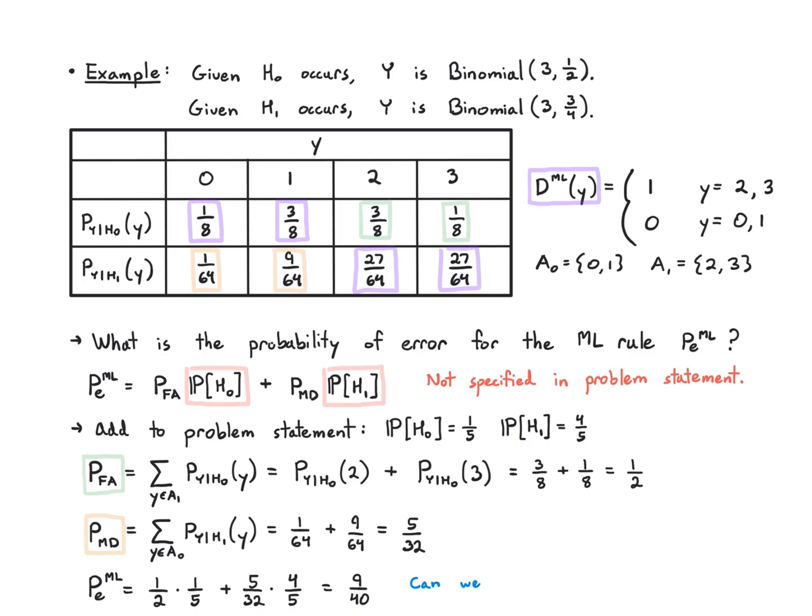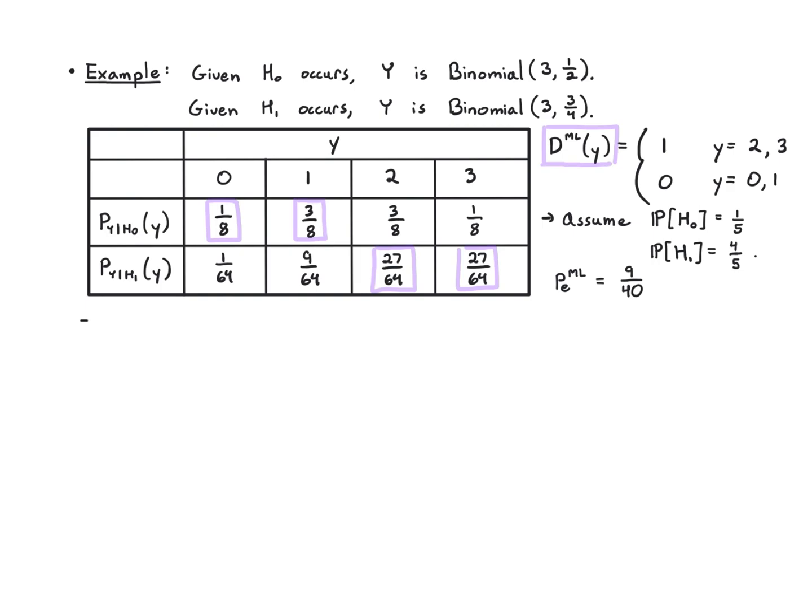Just to wrap this up, can we do better than that? Can I get a lower probability of error than 9 over 40? It turns out I can in this case. The way I'm going to do that is I'm going to determine the MAP rule and its probability of error, and we're going to see in this case it gets me a better performance.